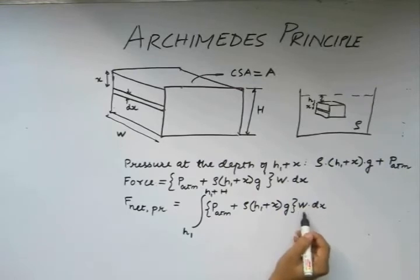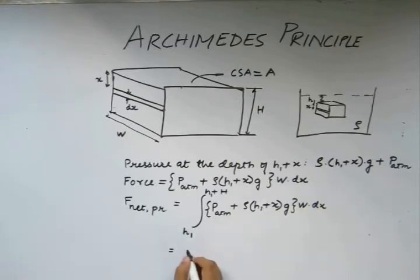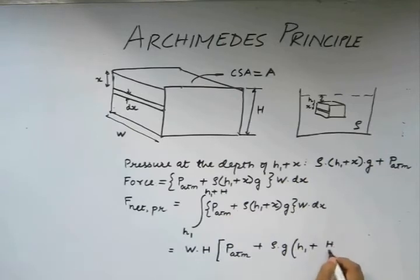W being constant, we can take this out. And after integrating this, we have W times capital H multiplied by P_atm plus ρ times g times (h1 plus capital H by 2).